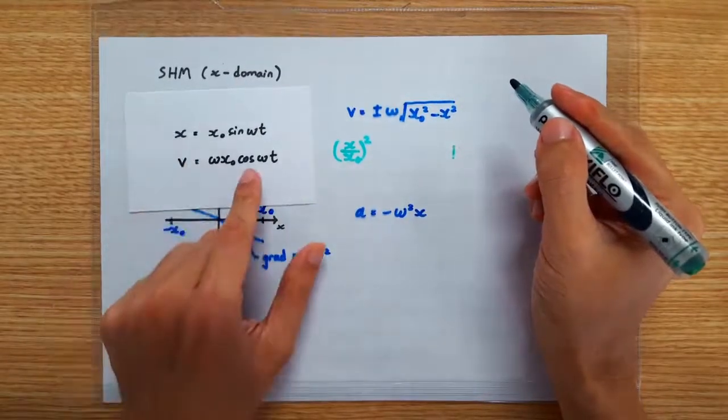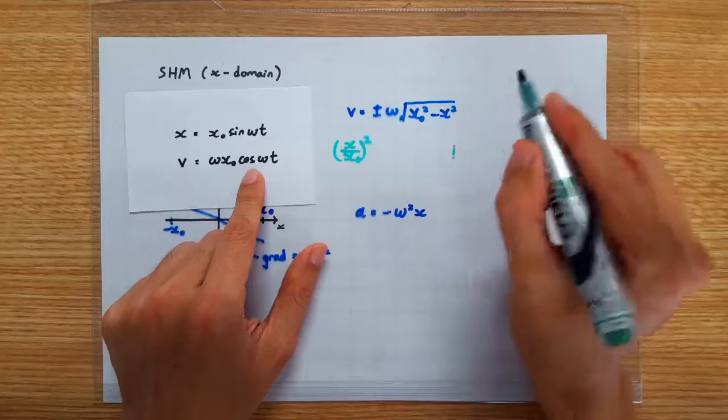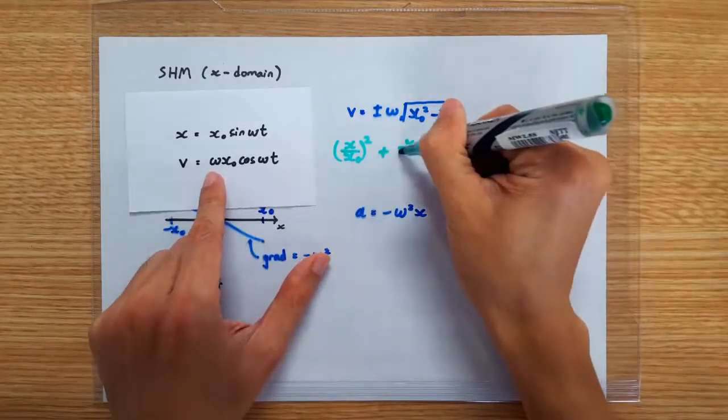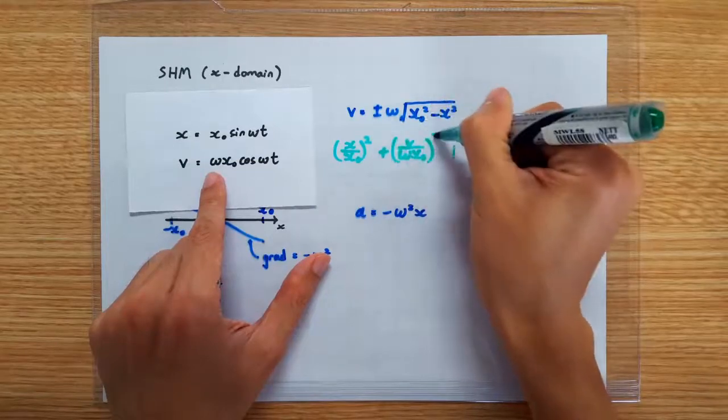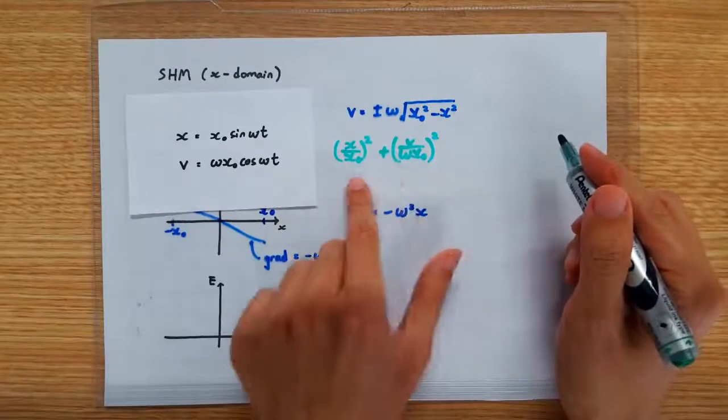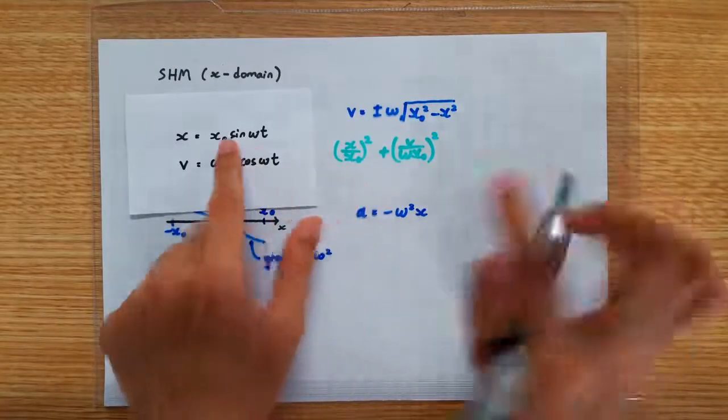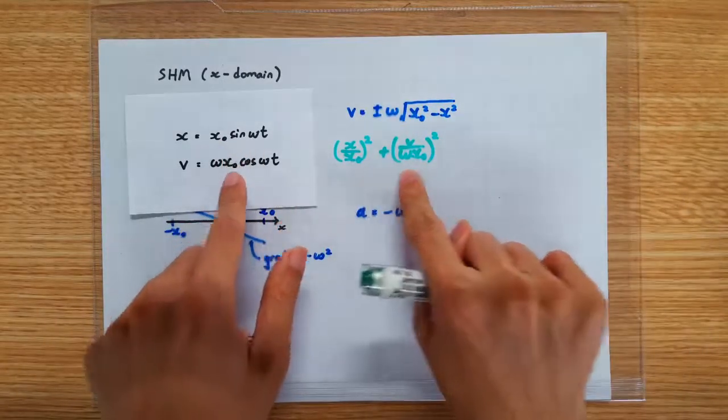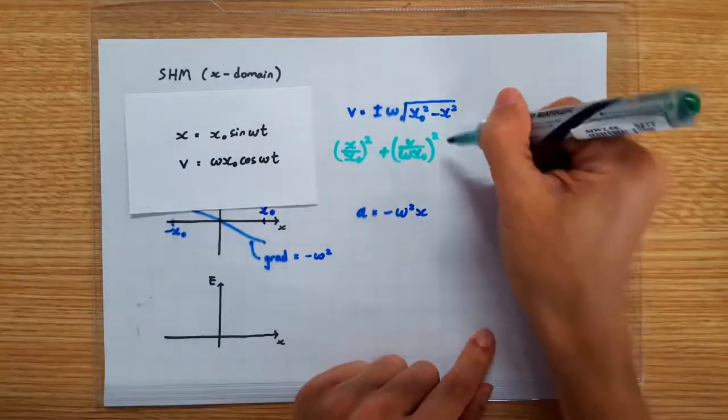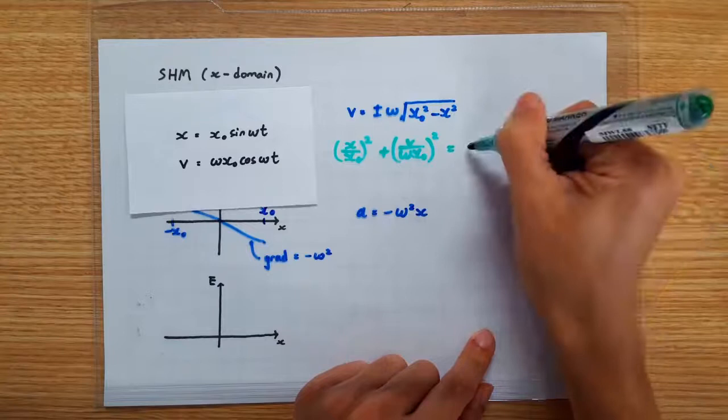Likewise, cos square omega t can be written as V over omega X0 square. If we sum up these two terms, we are actually summing up sin square plus cos square, which we know from trigonometric identity to be always equal to 1.